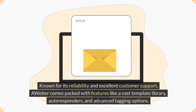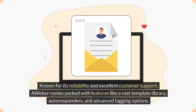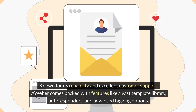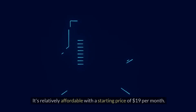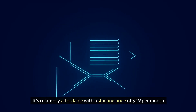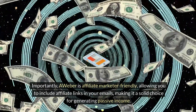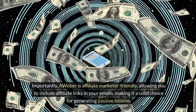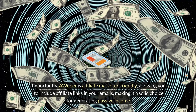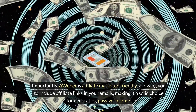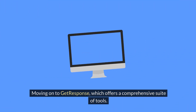Next, we have AWeber. Known for its reliability and excellent customer support, AWeber comes packed with features like a vast template library, autoresponders, and advanced tagging options. It's relatively affordable with a starting price of $1.19 per month. Importantly, AWeber is affiliate marketer-friendly, allowing you to include affiliate links in your emails, making it a solid choice for generating passive income.